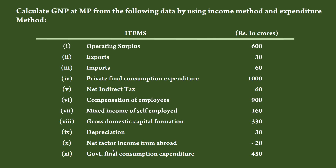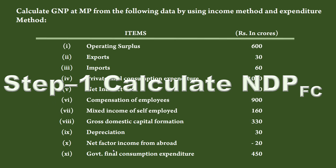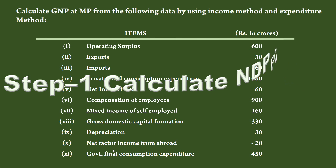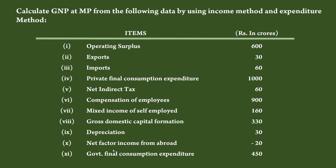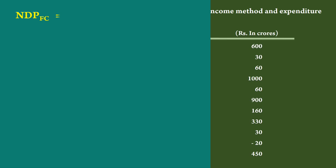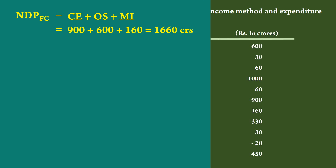First, let us see how to calculate gross domestic product at market price using income method. Step 1: Calculate net domestic product at factor cost. To do this, we have to add compensation of employees 900 crores, operating surplus 600 crores, mixed income of self-employed 160 crores. Net domestic product at factor cost is equal to 900 plus 600 plus 160 crores.